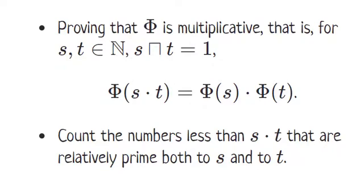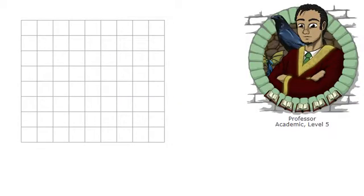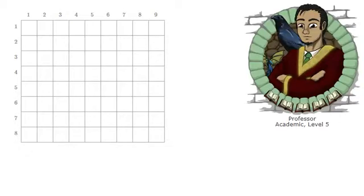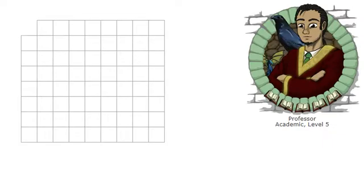Eight and nine are certainly relatively prime. We begin by drawing a grid. This grid has nine columns and eight rows. We won't be needing the top left grid square, so we remove it. Then row by row, we write successive natural numbers in the squares, like this.